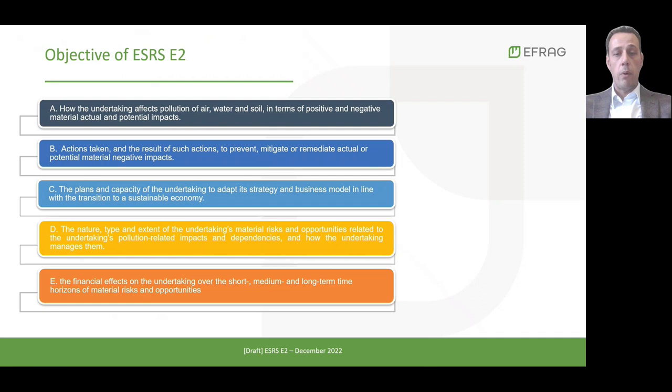The objective of ESRS E2 is to specify the disclosure requirements which will enable users of the sustainability statements to understand five areas of disclosure: how the undertaking affects pollution of air, water and soil in terms of material positive and negative actual or potential impacts; the actions to prevent or mitigate these impacts; the changes in strategy and business models in line with the transition to a sustainable economy; the material risks and opportunities; and the financial effects on the undertaking over the short, medium and long term.